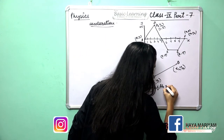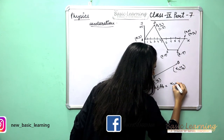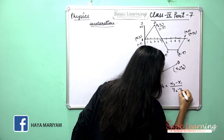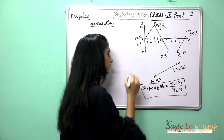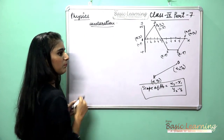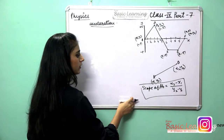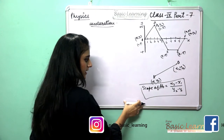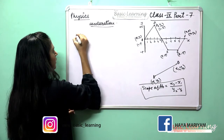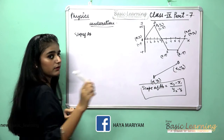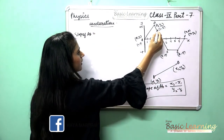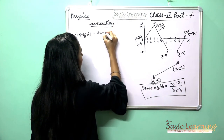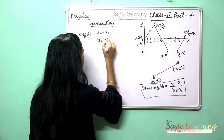The slope of AB will be calculated using the formula: slope = (y2 − y1) / (x2 − x1). This is the formula you have to keep in mind when calculating acceleration with the help of the velocity-time graph.